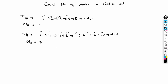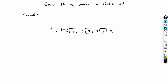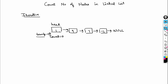Now let's discuss the iterative solution first. Say this is my list containing nodes one, nine, seven, and twelve, followed by null. This is my head node which contains the address of the first node. I can iterate over the whole list and maintain a counter, incrementing it by one every time I go to the next node. I maintain a temp variable pointing to the head node.